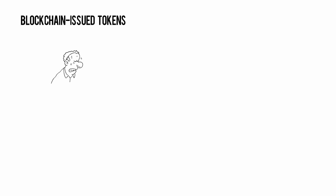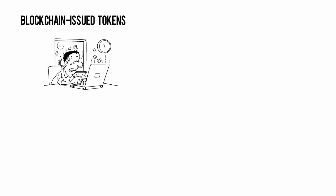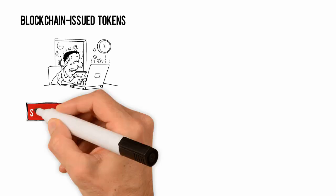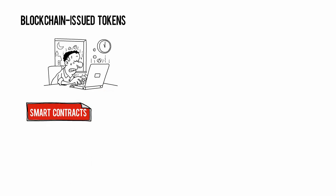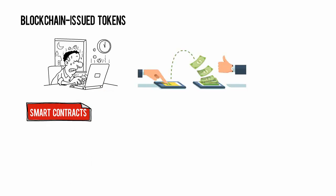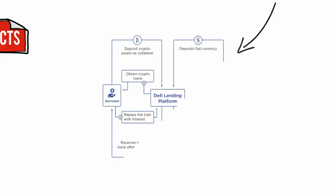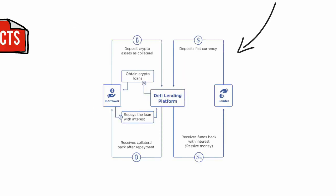Stablecoins are blockchain-issued tokens designed to hold onto specific values, such as the US dollar or Tether. Developers can also create sophisticated smart contracts that automate complex financial transactions by removing the need for a middleman to verify them — for example, open loan lending protocols.